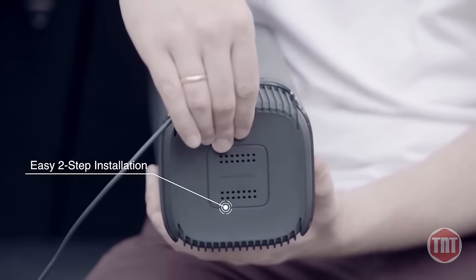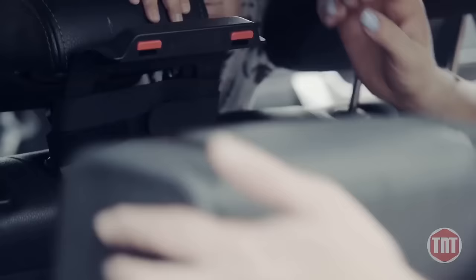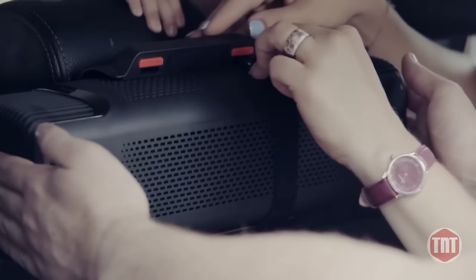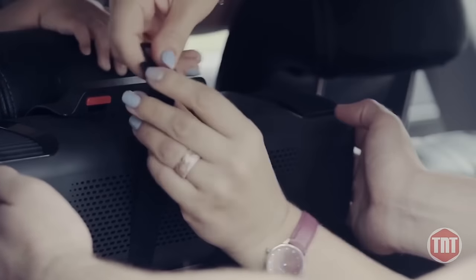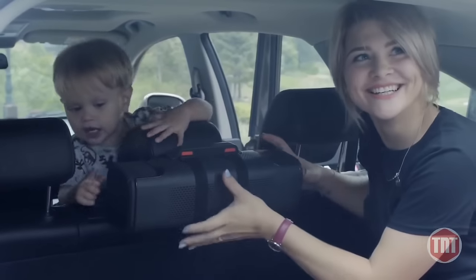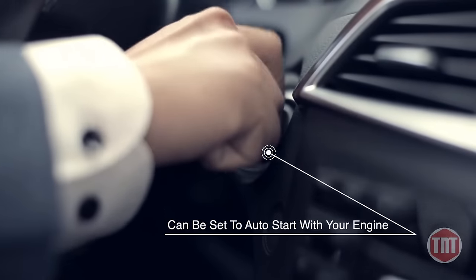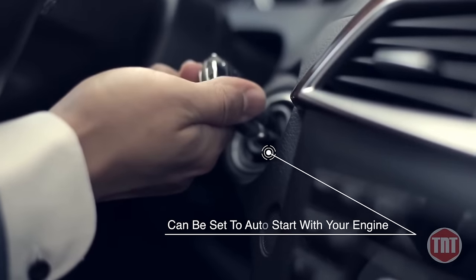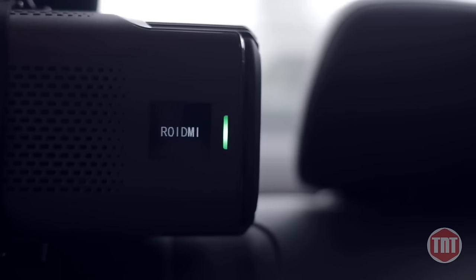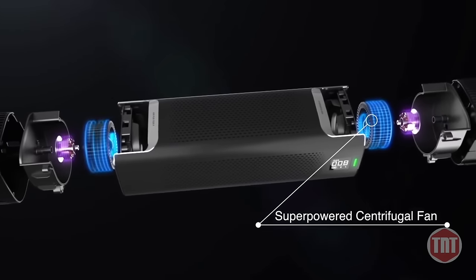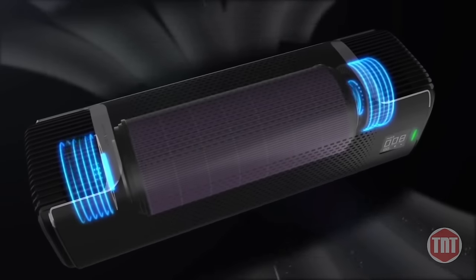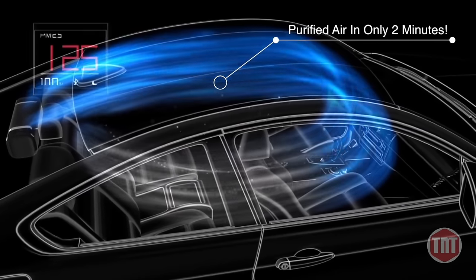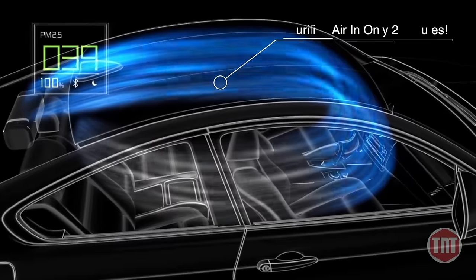With just two easy steps, you can install the Bluetooth-enabled ROIDME P8S and sync it with your car, allowing it to automatically turn on when your engine is started. Its super-powered centrifugal fan removes air pollutants and refreshes your entire vehicle in only two minutes, without adding any noise pollution.